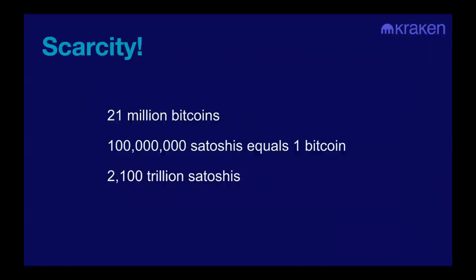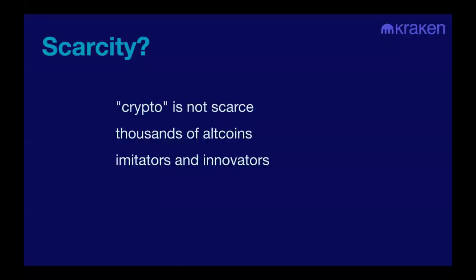The 21 million Bitcoin hard cap means there are 2.1 quadrillion Satoshis to go around. Even if Bitcoin are scarce, can't people copy-paste the open source code and create their own altcoin? Yes, they can, and they do — there are thousands of altcoins, some just imitating Bitcoin, others trying to innovate. The crypto markets as a whole are not scarce. Much like art — the artwork on your refrigerator from your grandchild will be hard to auction off for any amount of money, while a Leonardo da Vinci recently sold for $450 million. Even if art is not scarce, specific pieces by specific artists are scarce. It's differentiation that is the key.